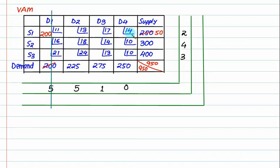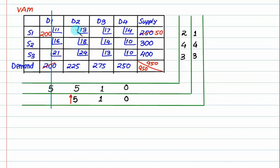Next iteration penalties: 30 and 14 gives 1; 18 and 14 and 10 gives 4; 13 and 10 gives 3. Skip the cancelled row. Costs 13 and 18 give penalty 5; 10 and 10 gives 0. Maximum penalty is 5. Minimum cost is 30. How much allocation is possible? 50. How much is left? 175. Strike out the row.